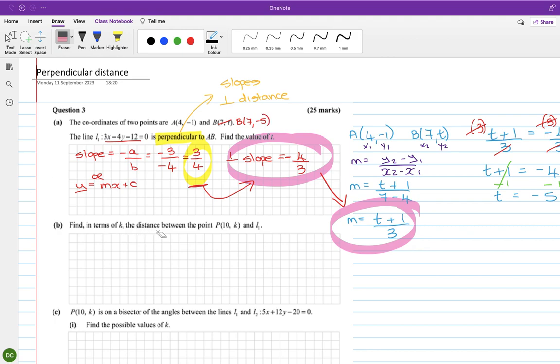So find in terms of k the distance between the point... I said this up here—this is literally distance between a point and a line. So distance between a point and a line is the perpendicular distance formula. So the perpendicular distance is ax1 + by1 + c over the square root of a squared plus b squared. L1 is 3x - 4y - 12 = 0, so a is 3, b is minus 4, and c is minus 12.